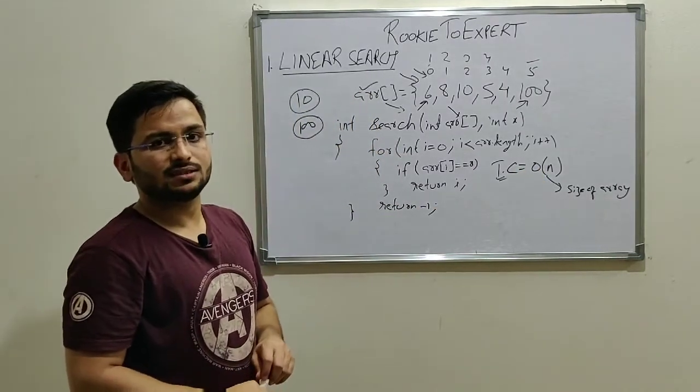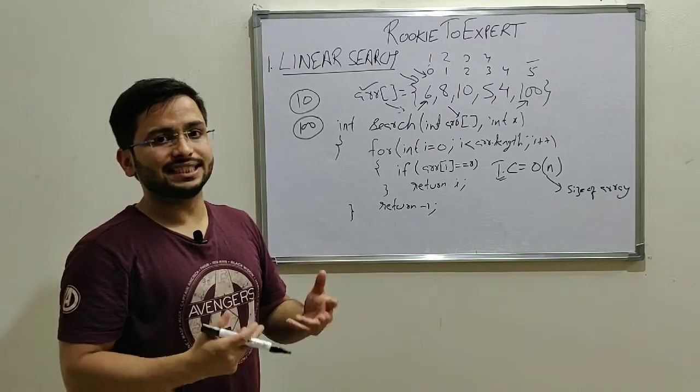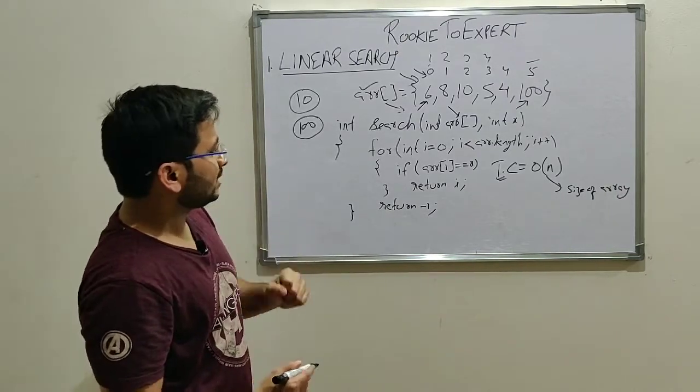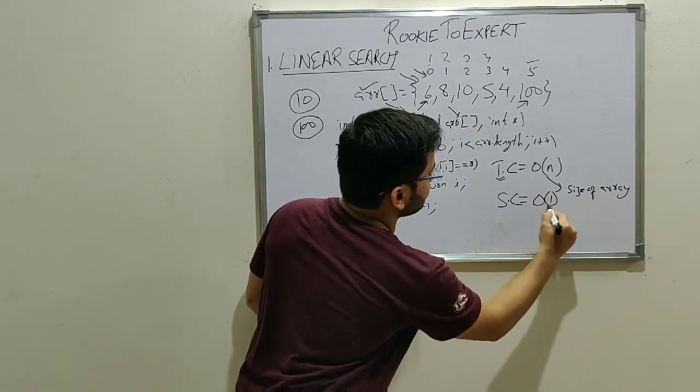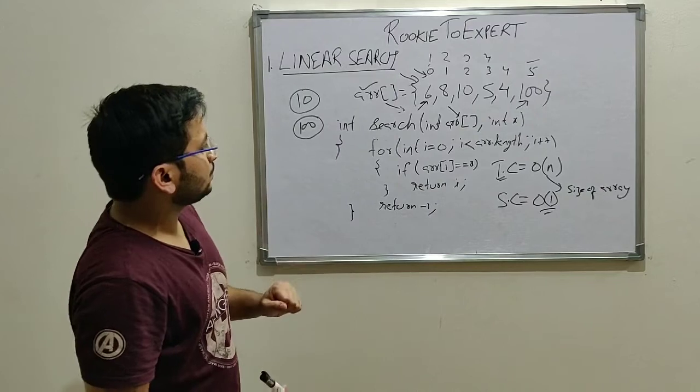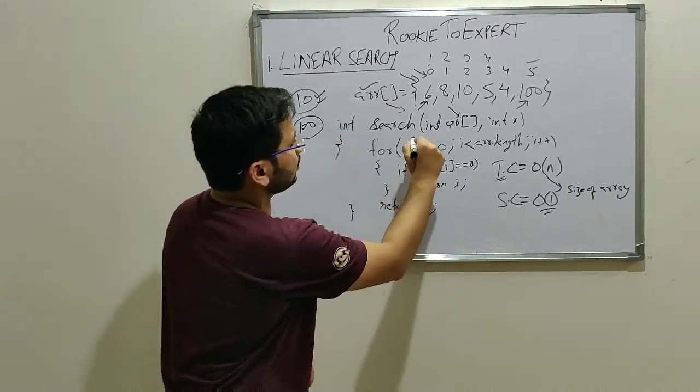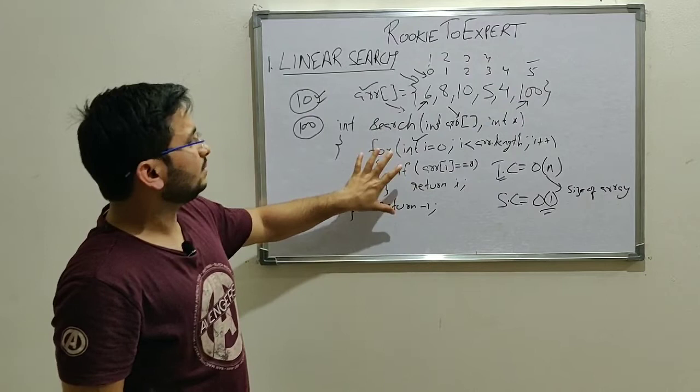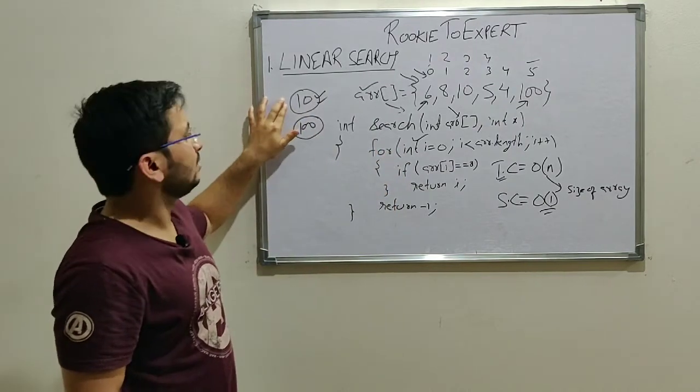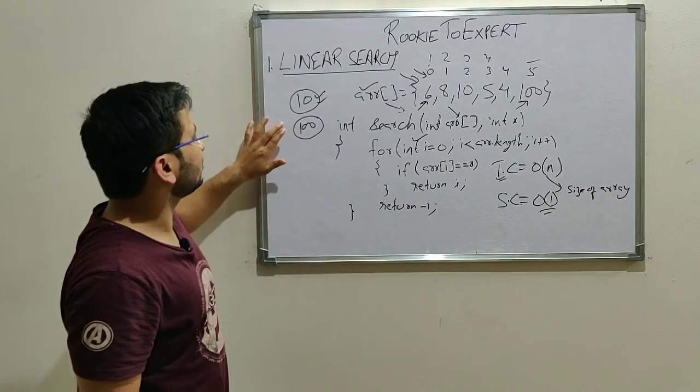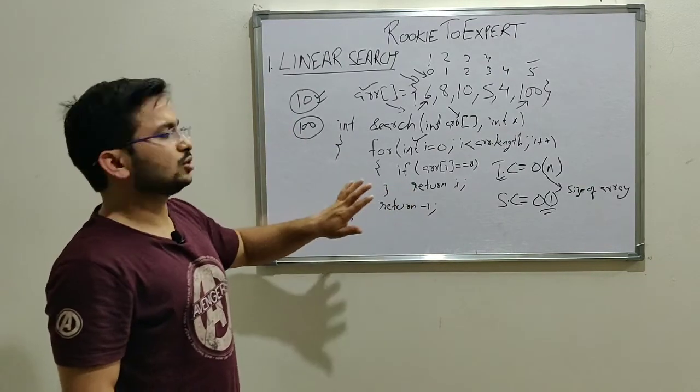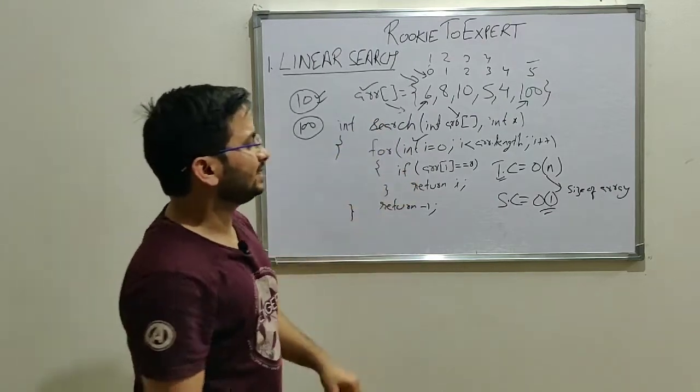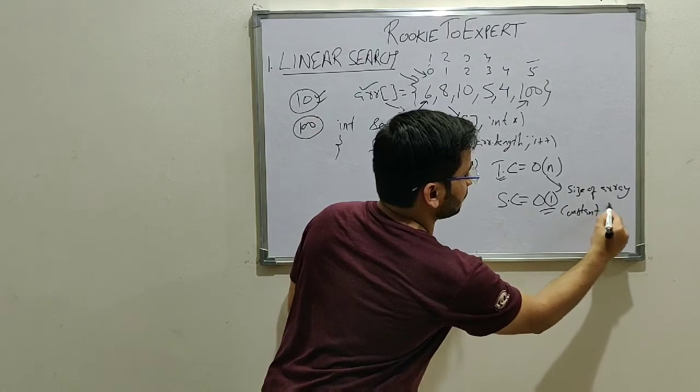And what will be our space complexity? So space complexity is basically extra memory that we need to run this program. So here, what is the extra space that we need? So extra space is constant. Why is it so? So suppose the size is 10. How much space do we need? You need a space for i. And there is no more variable that we need. So even if the size is 10, our space complexity is constant. Even if the size of the array is 100, space complexity is constant. So our space complexity or the extra memory that we need does not depend on the size of the array. That's why space complexity is constant.